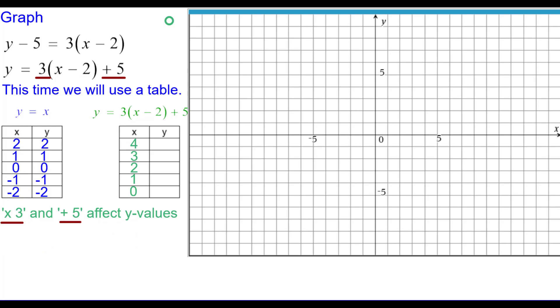The times 3 and the plus 5 affect y values. And by the order of operations, we multiply by 3 first and then we add 5 second. So we're going to take each y value and multiply by 3 and then add 5. So in this case, 2 times 3 is 6 plus 5 is 11. And that's shown right here how we're doing that. So we'll go ahead and plot 4 comma 11, which is kind of off our screen here.